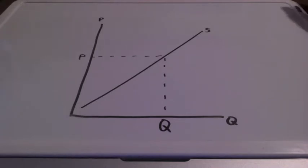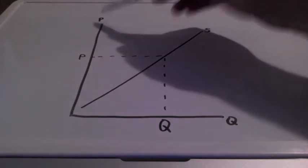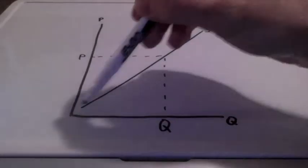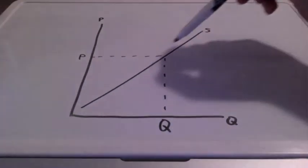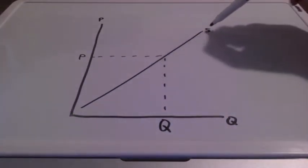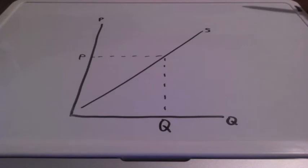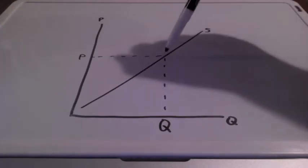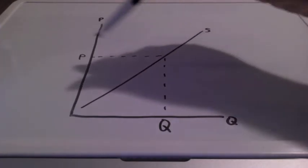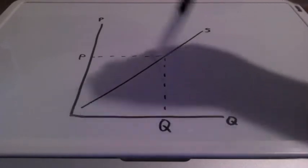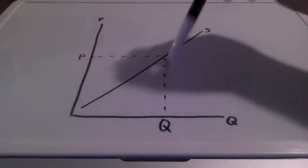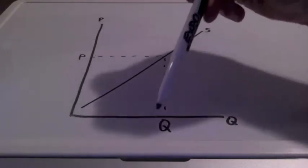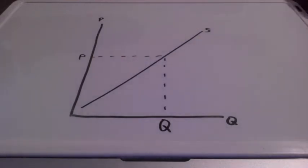Similar to our demand graph, we have price, we have quantity, and this time we have an upward sloping supply curve. We have S representing supply, and we have an equilibrium point, meaning the middle point for price and quantity. This will be our starting point for our supply graphs.